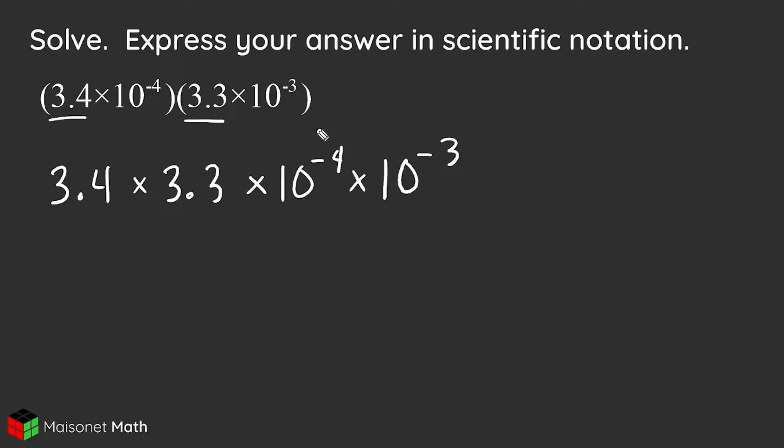So when you're multiplying a bunch of numbers together, it doesn't matter what order that you go in. So we're going to multiply 3.4 by 3.3 first, which gives us 11.22.